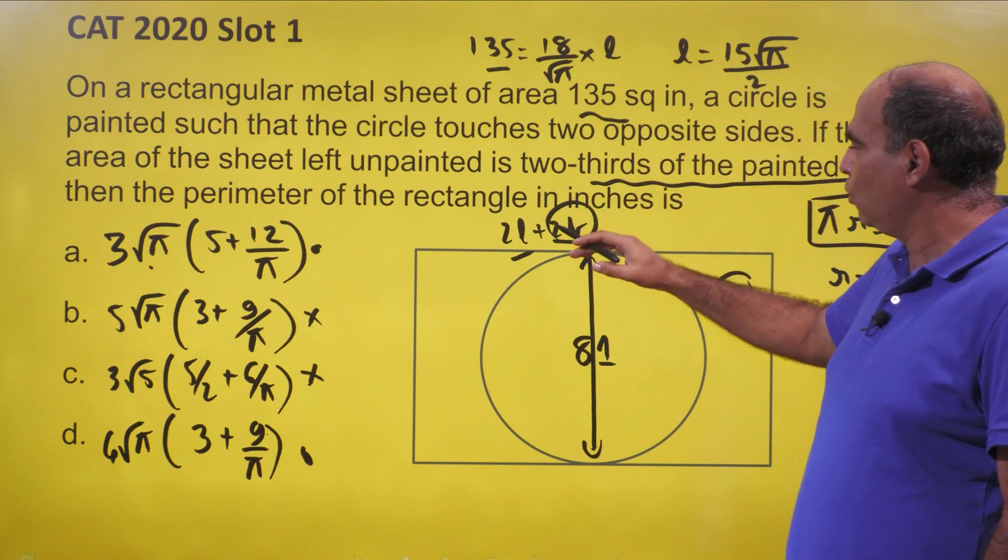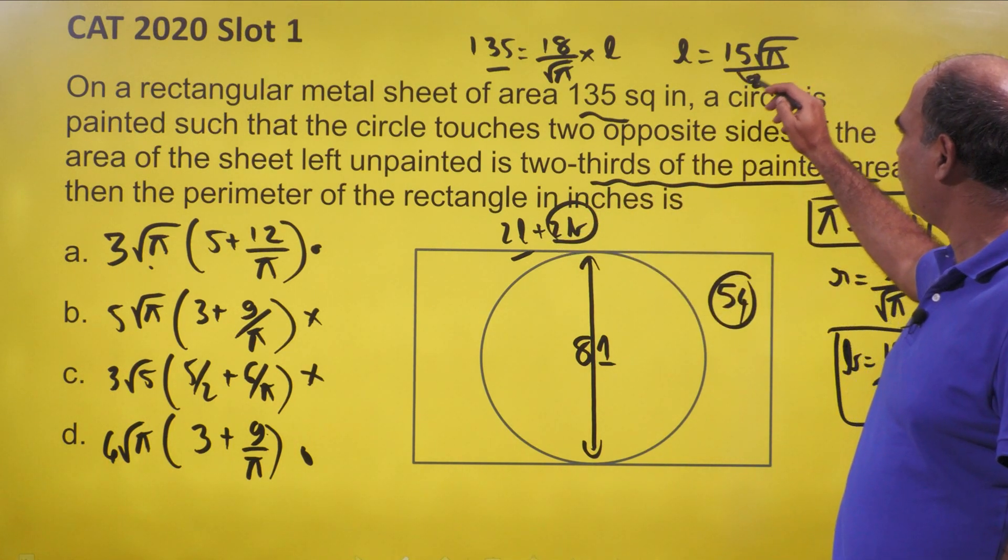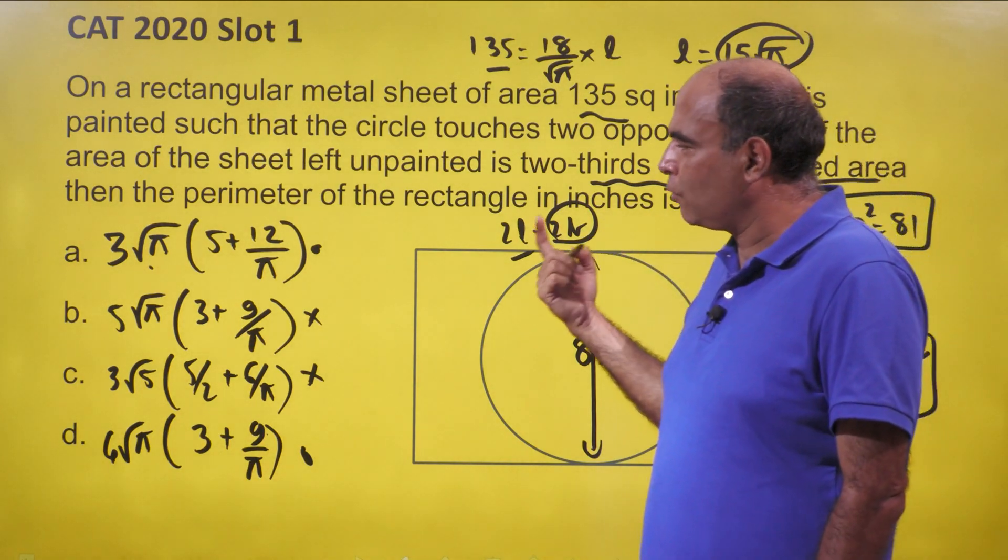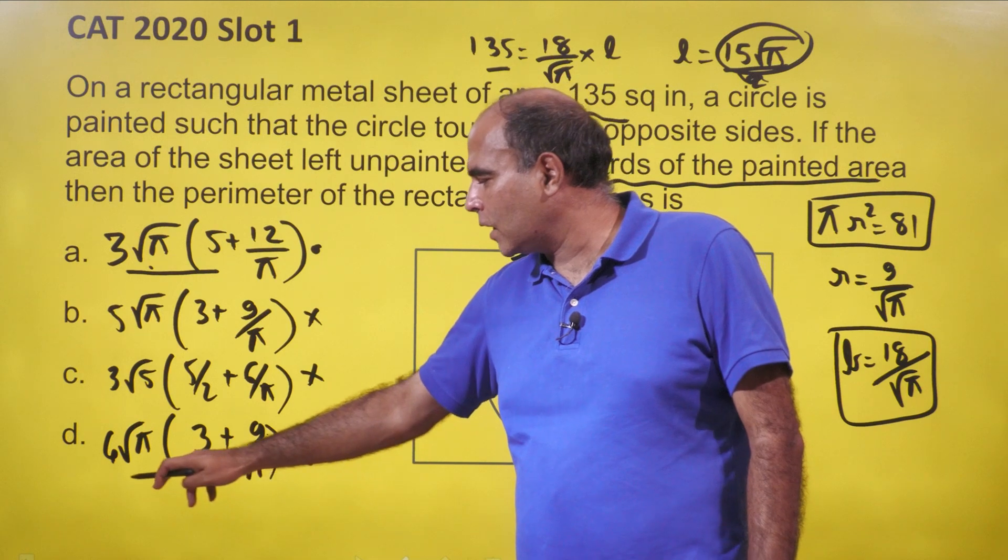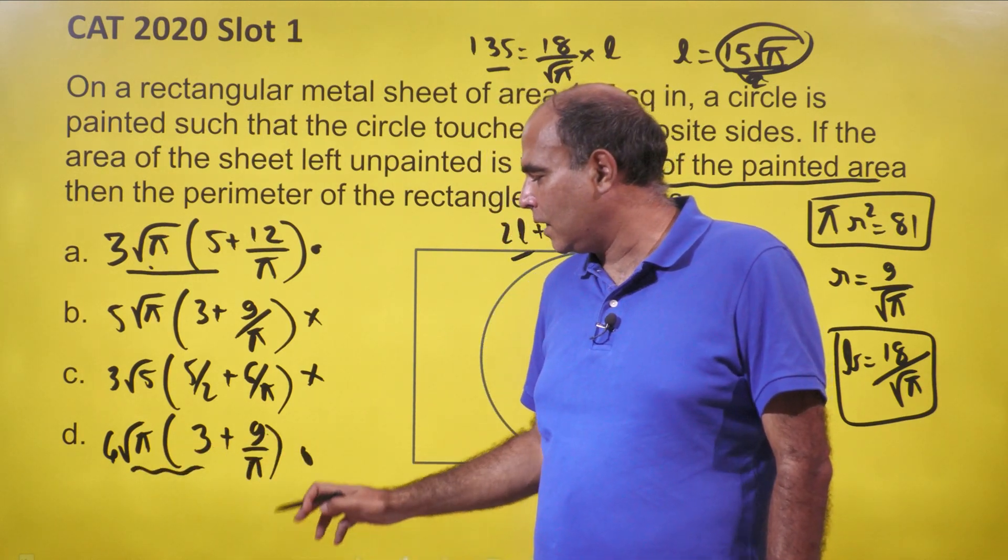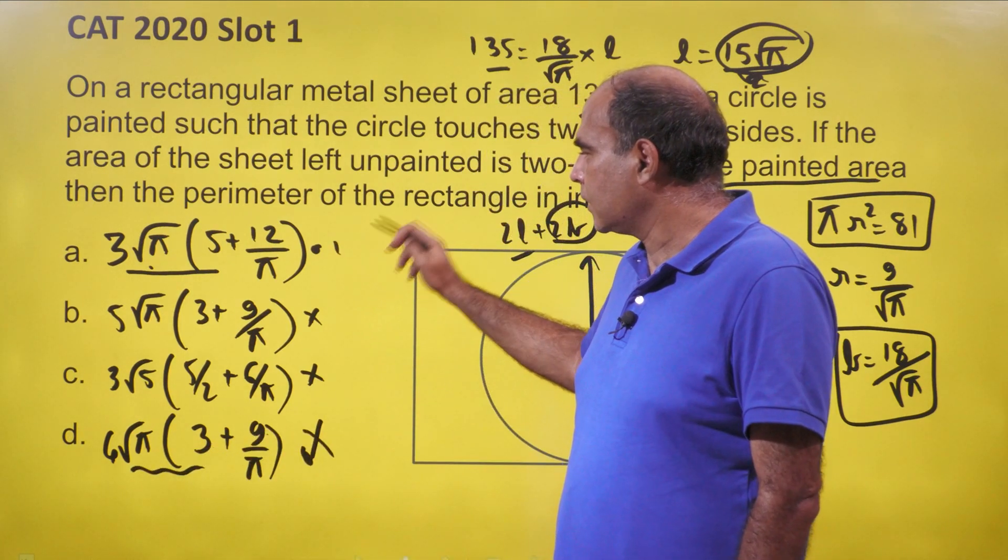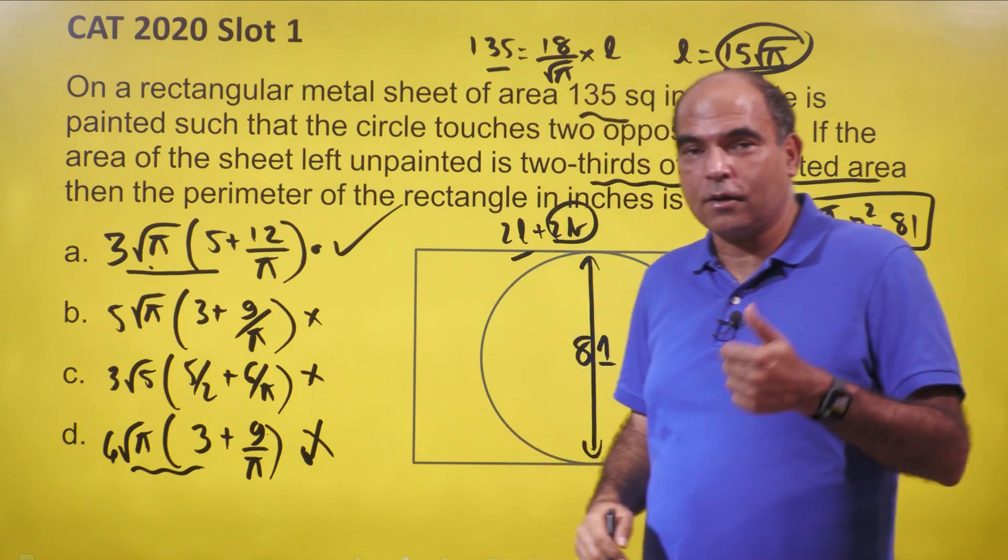So twice the length will become 15 root π, and the correct answer has to have 15 root π component also, which only option A has. Option D takes me to 12 root π, and hence I can eliminate option D. The correct answer is option A. Hope you enjoyed that. Do follow me for more.